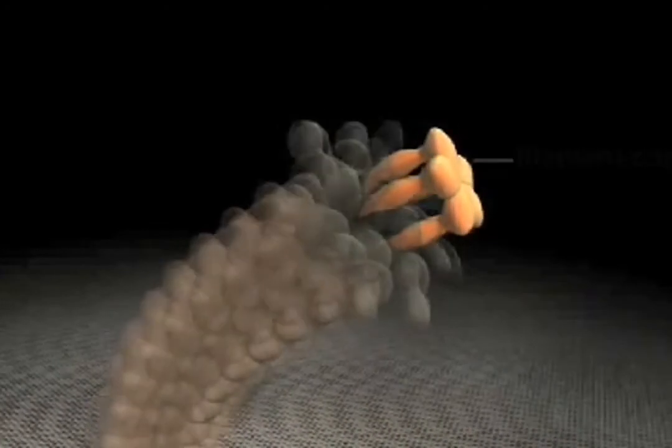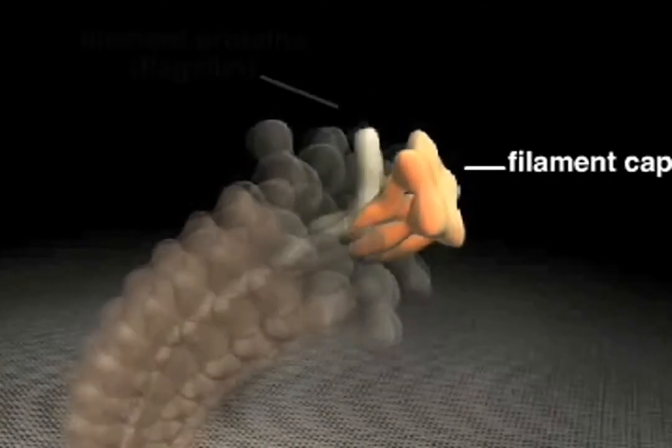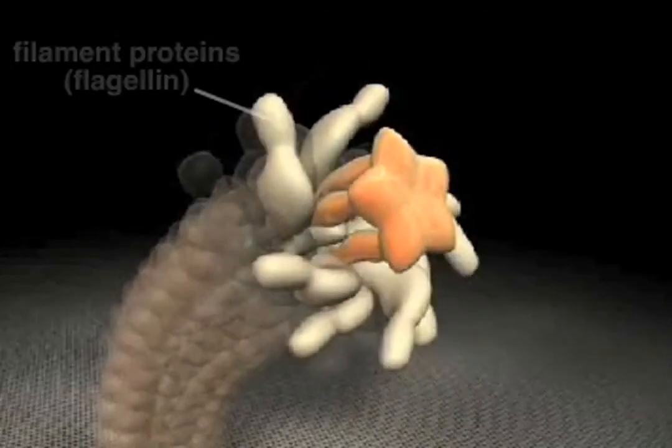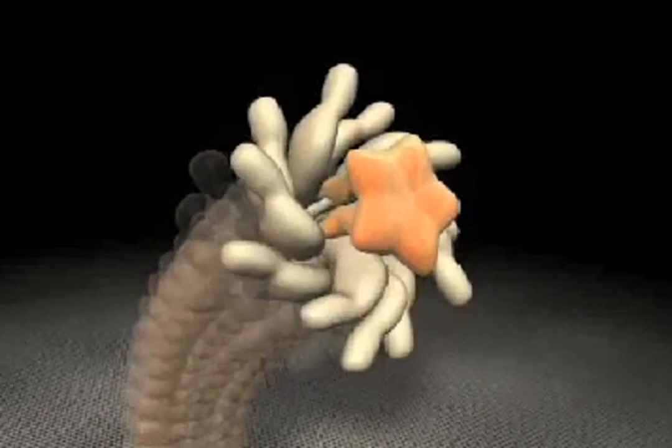Finally, yet another cap is built and filament proteins assemble. Like the rod and hook proteins, they travel through the hollow channel inside the filament to reach the distal end.